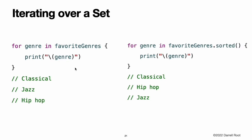Iterating over a Set. You can iterate over the values in a set with the for-in loop. For more about the for-in loop, see for-in Loops. Swift's set type does not have a defined ordering. To iterate over the values in a set in a specific order, use the sorted() method, which returns the set's elements as an array sorted using the less-than operator.